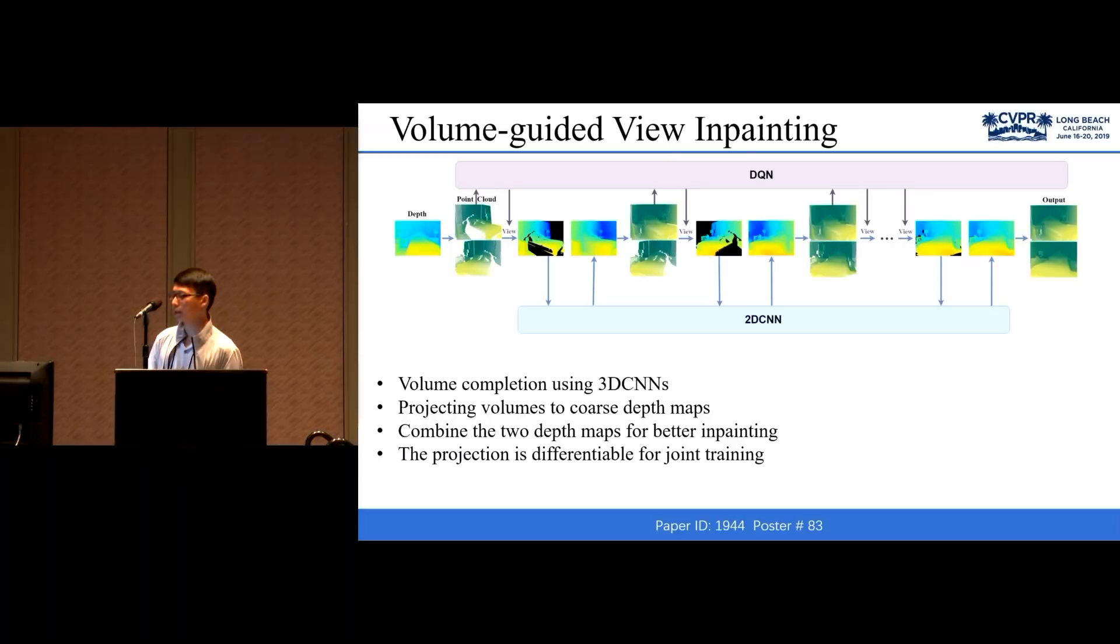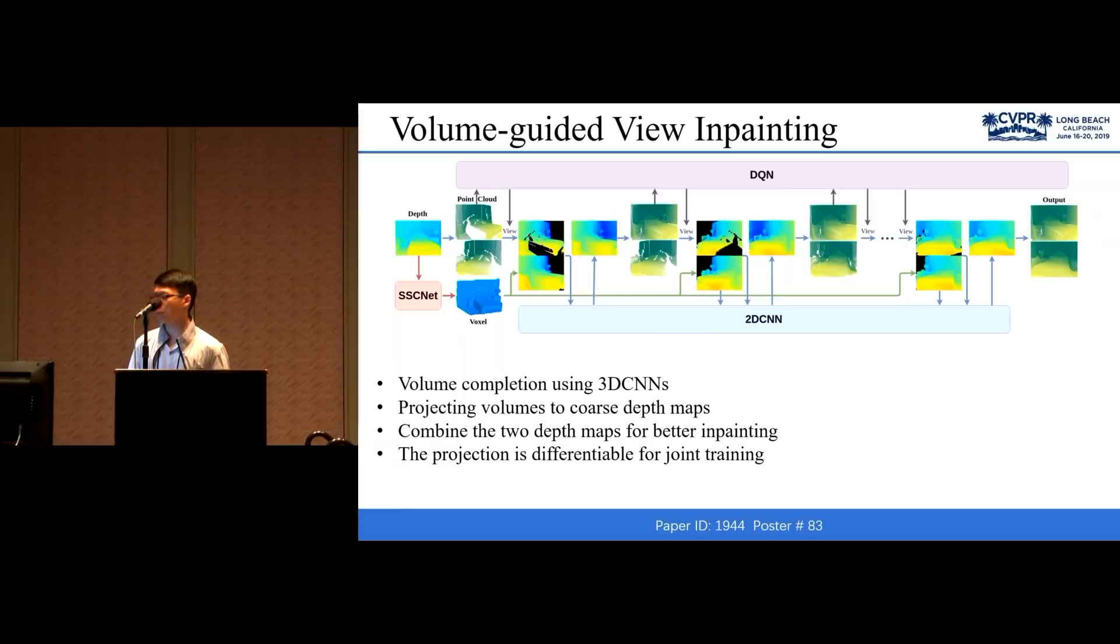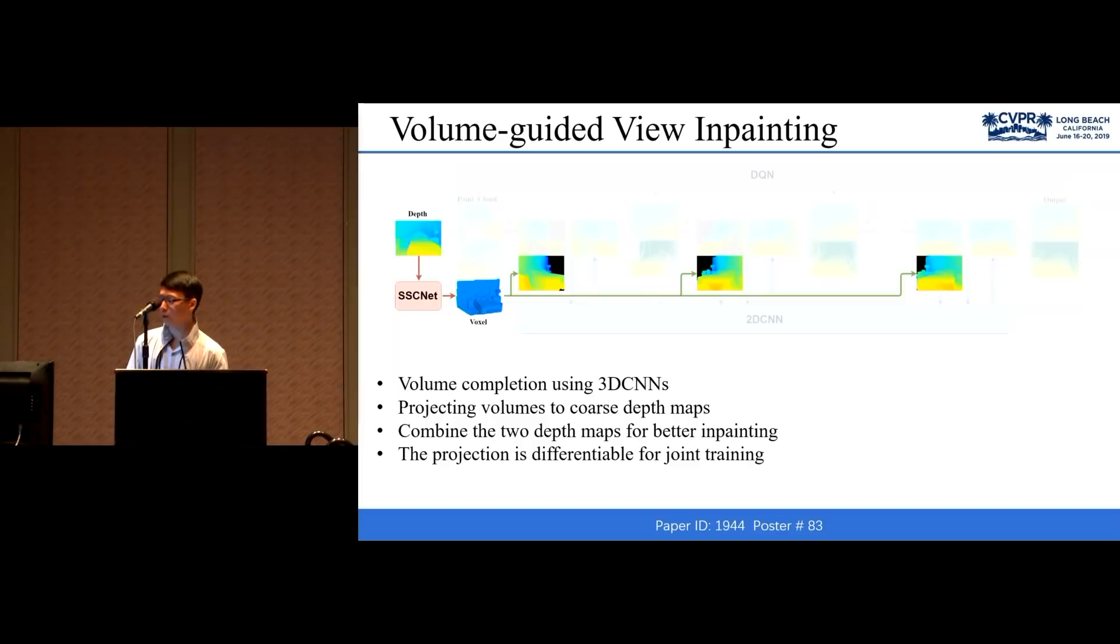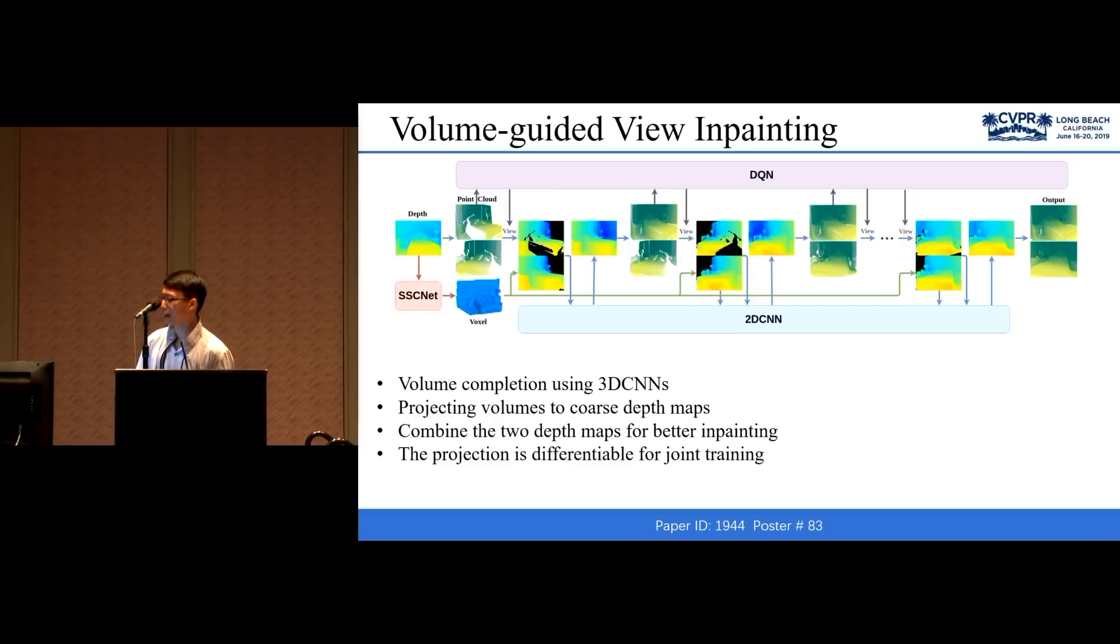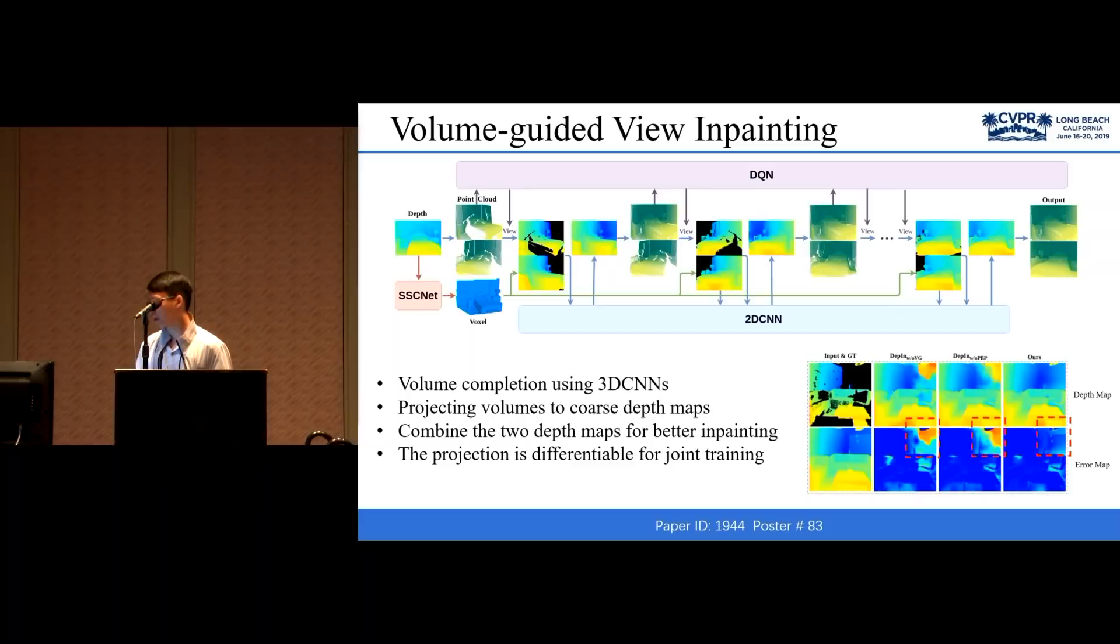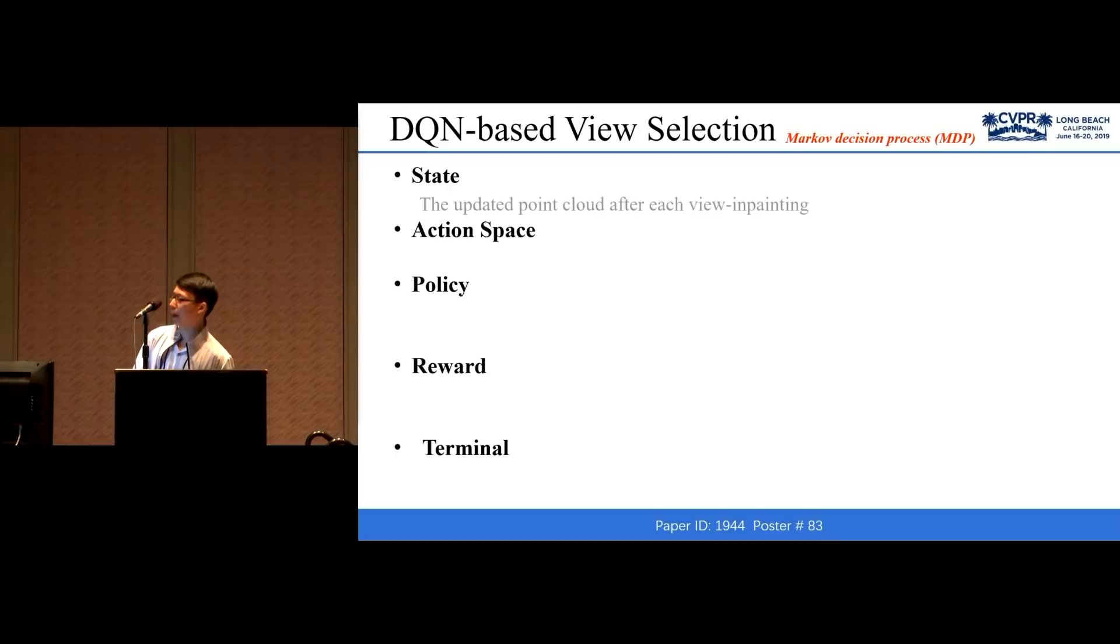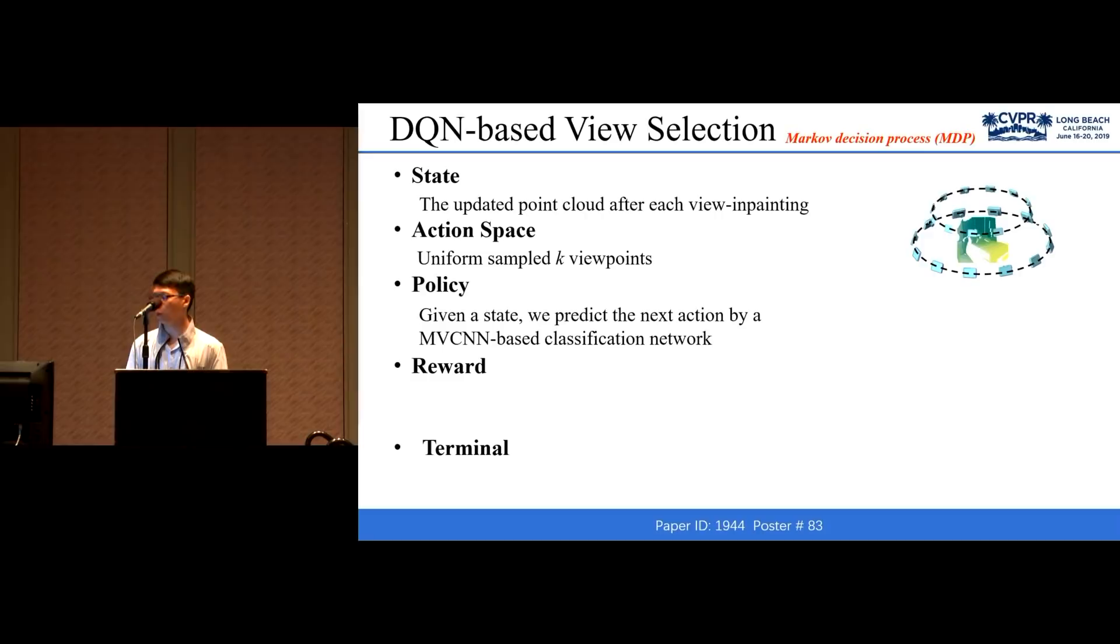To achieve better performance, we added the volume-guided part. While reprojecting the depth map to the point cloud, we also feed it to the SSCNet to output the volume completion. And we project the volumes to coarse depth maps at the same viewpoints as the point cloud uses. And we combine the two depth maps as the input of the inpainting network for better inpainting. And it is worth mentioning that the projection layer is differentiable for joint training. For the viewpath planning, we define the problem as a Markov decision process.